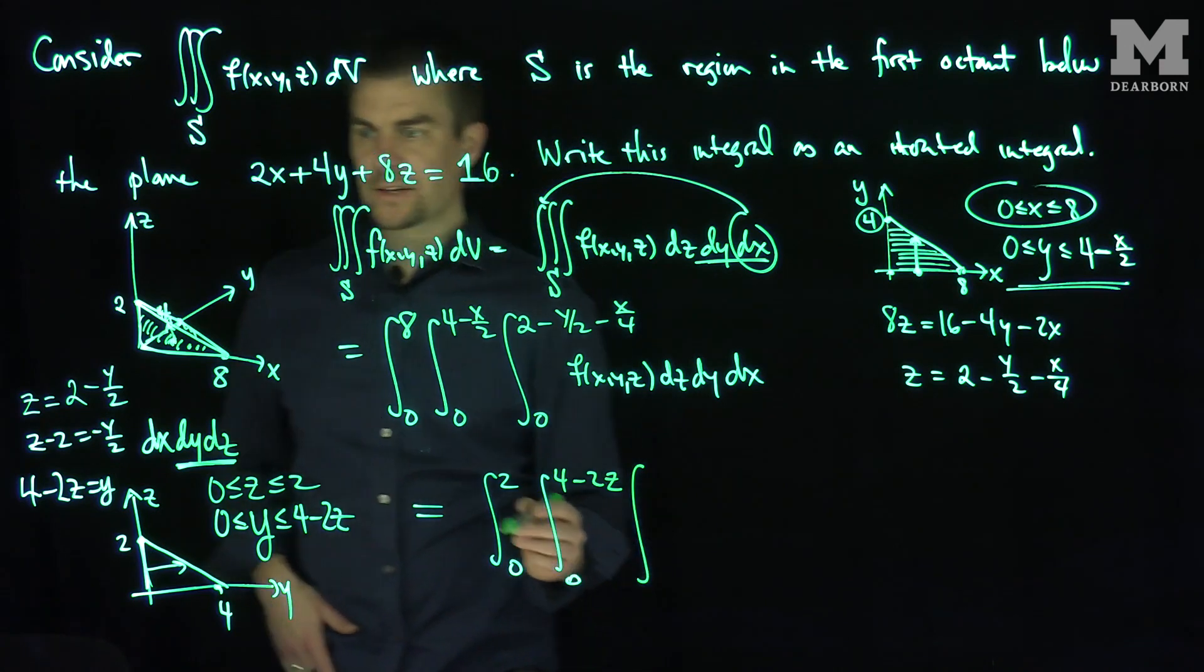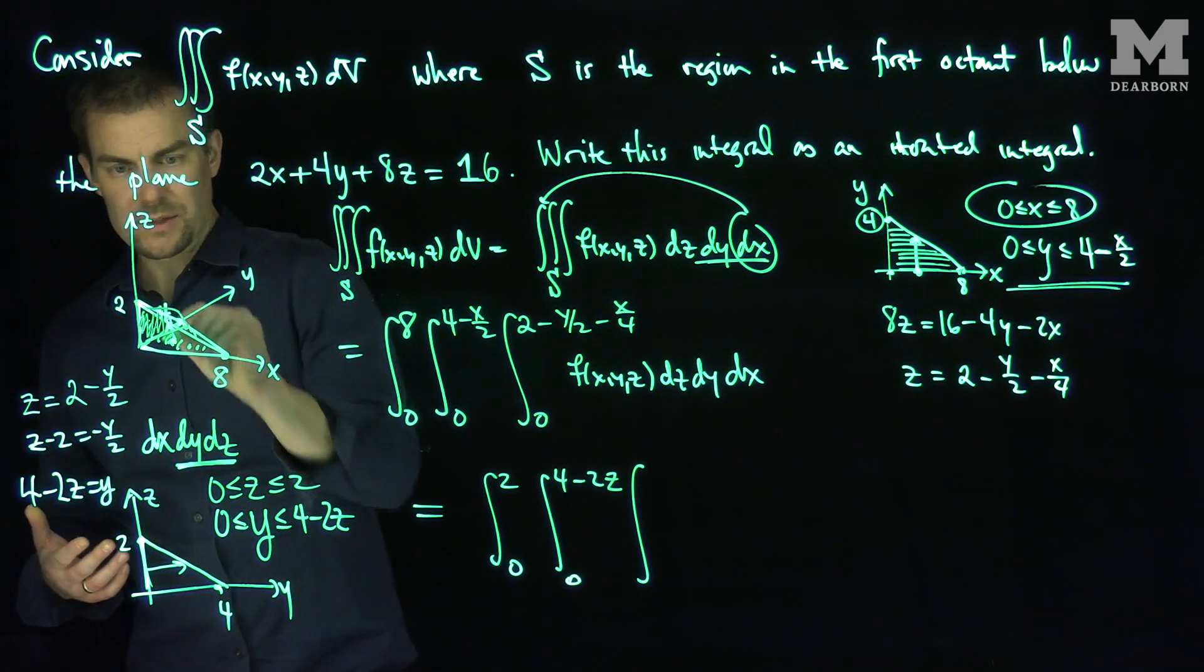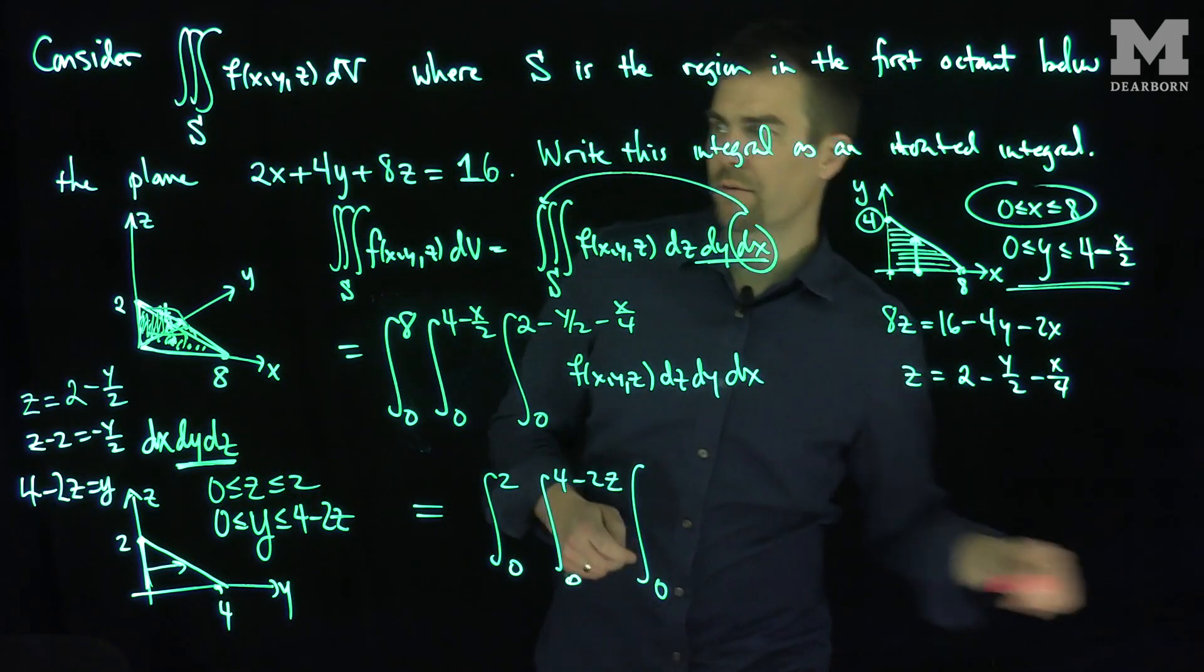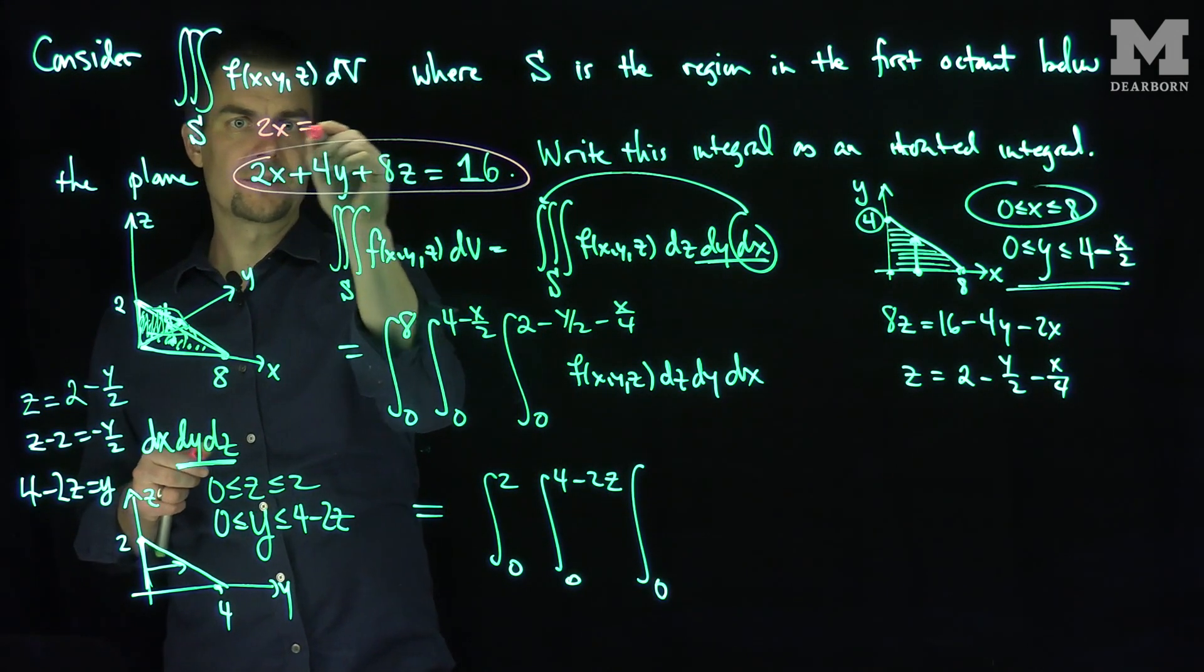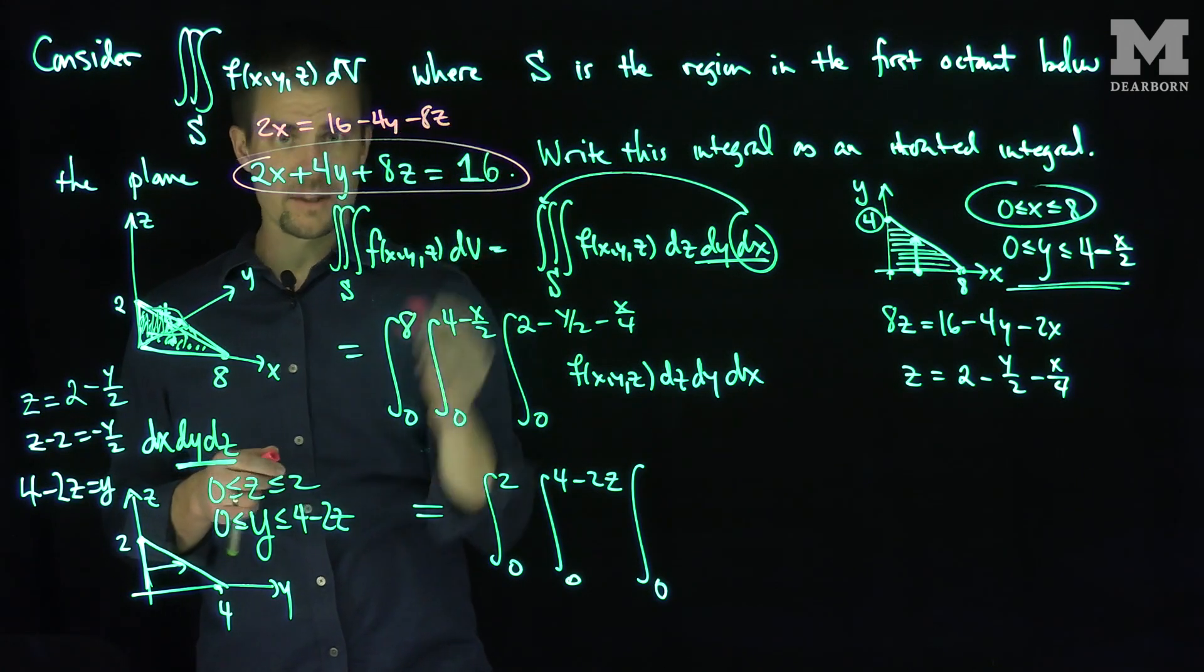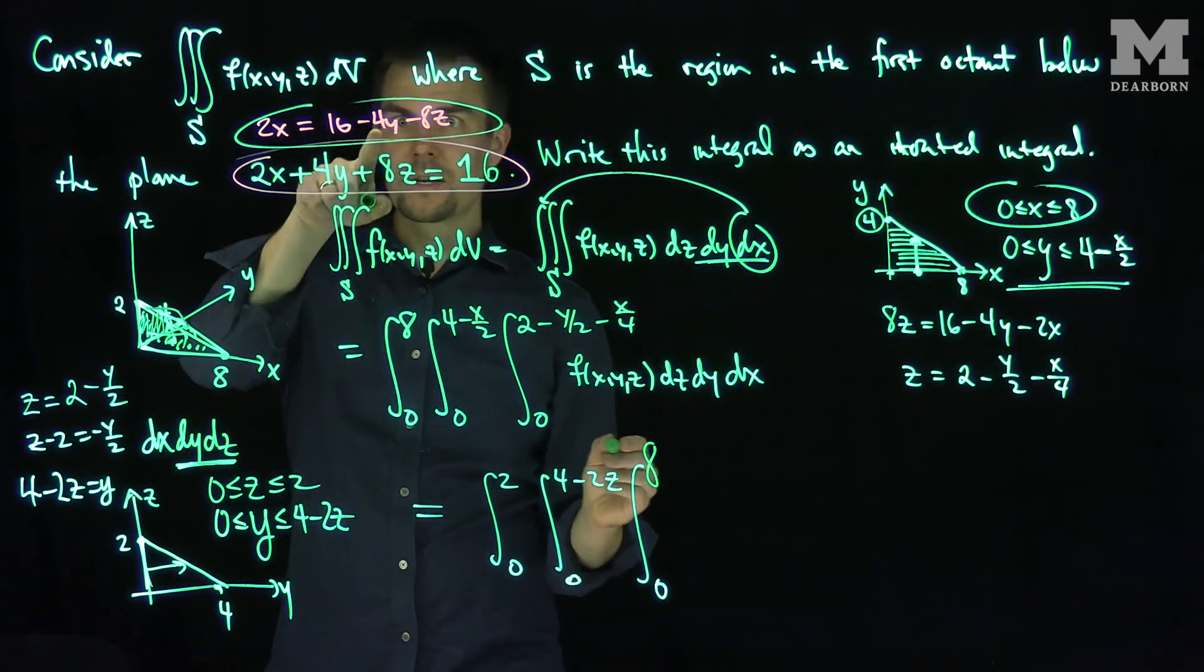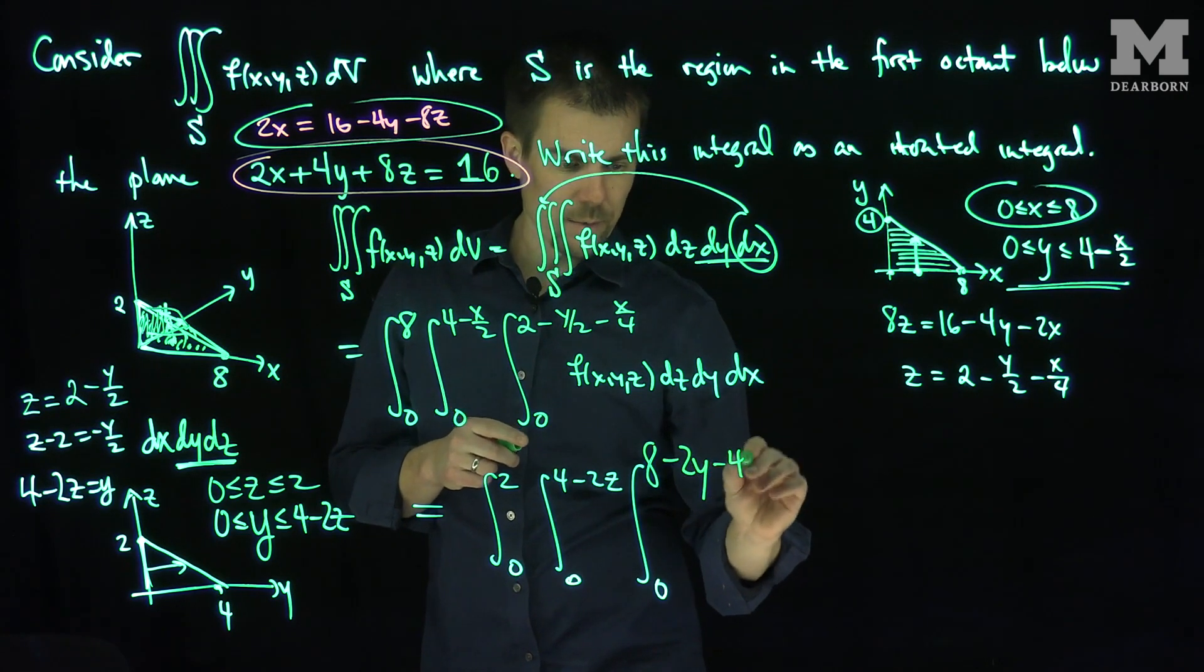And then where does x go between? Well, x is going to go between what? It starts in the yz plane. That's when x is equal to 0 and goes up to this plane. Well, what's the equation for x on this plane? How would solve this equation for x? This would say that 2x is equal to 16 minus 4y minus 8z. Divide by 2 to find out what x is. So x over here is going to be 8 and then minus 2y and then minus 4z.